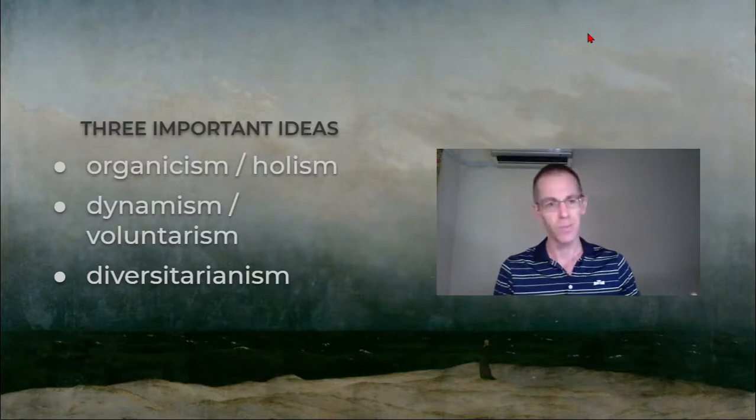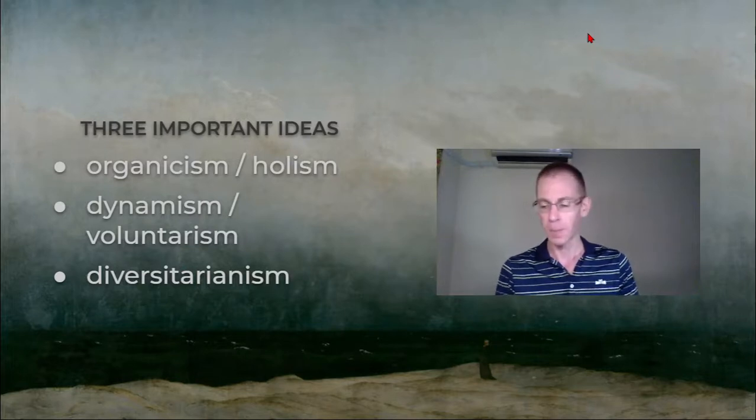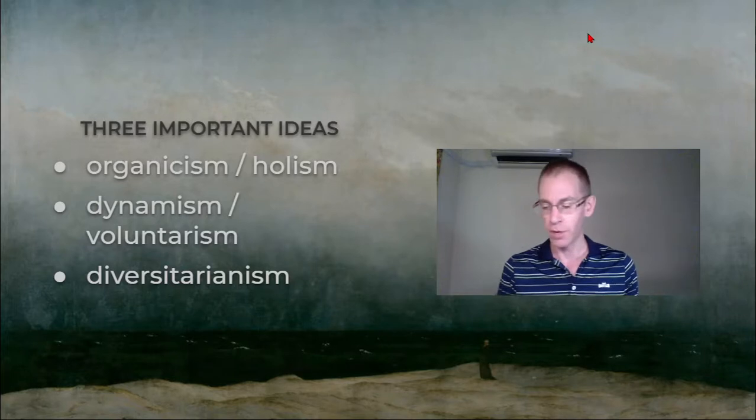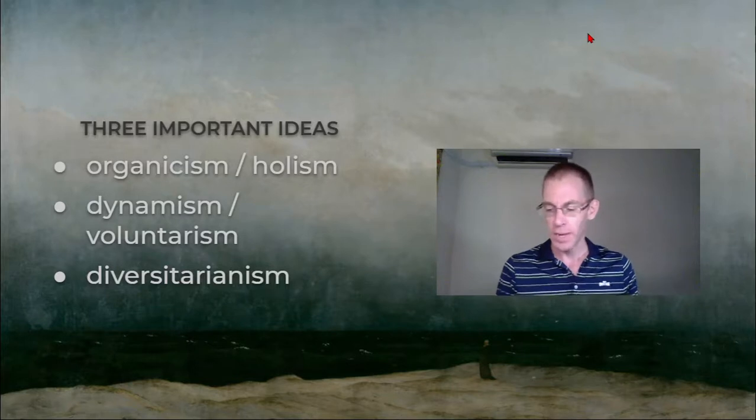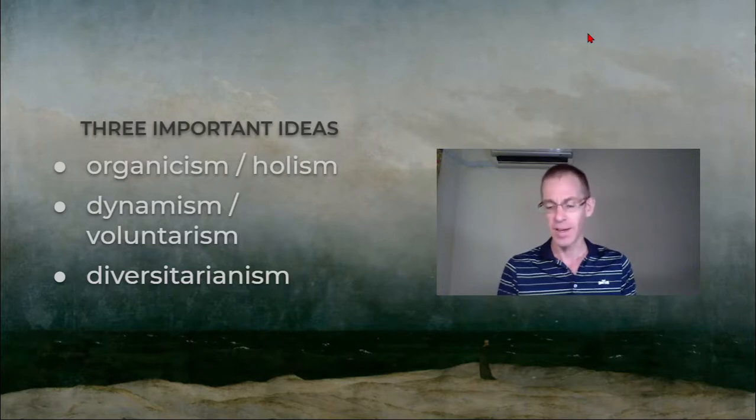Lovejoy tells us that there were two opposite—or at least very different, I don't know if they're opposite—but they were very different consequences to this privilege of diversity. The first was tolerance and appreciation of diversity, and this seems pretty good. We are still kind of living in this today. The second was the idea that people and societies should cherish and intensify their difference from others. This is a little bit different.